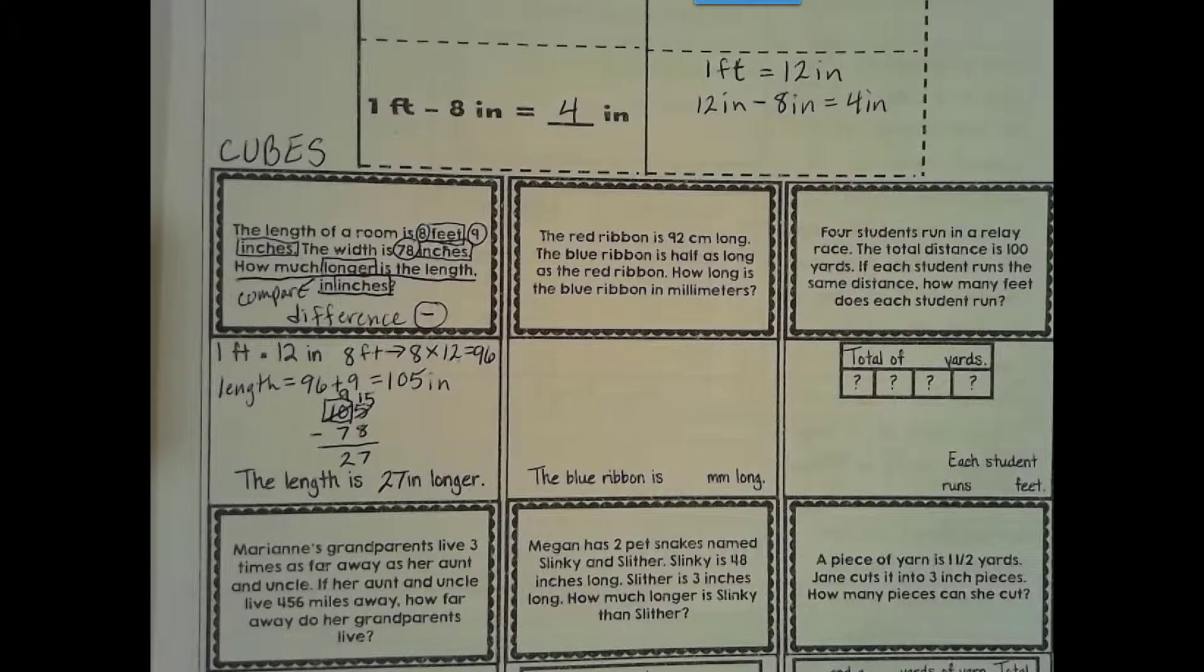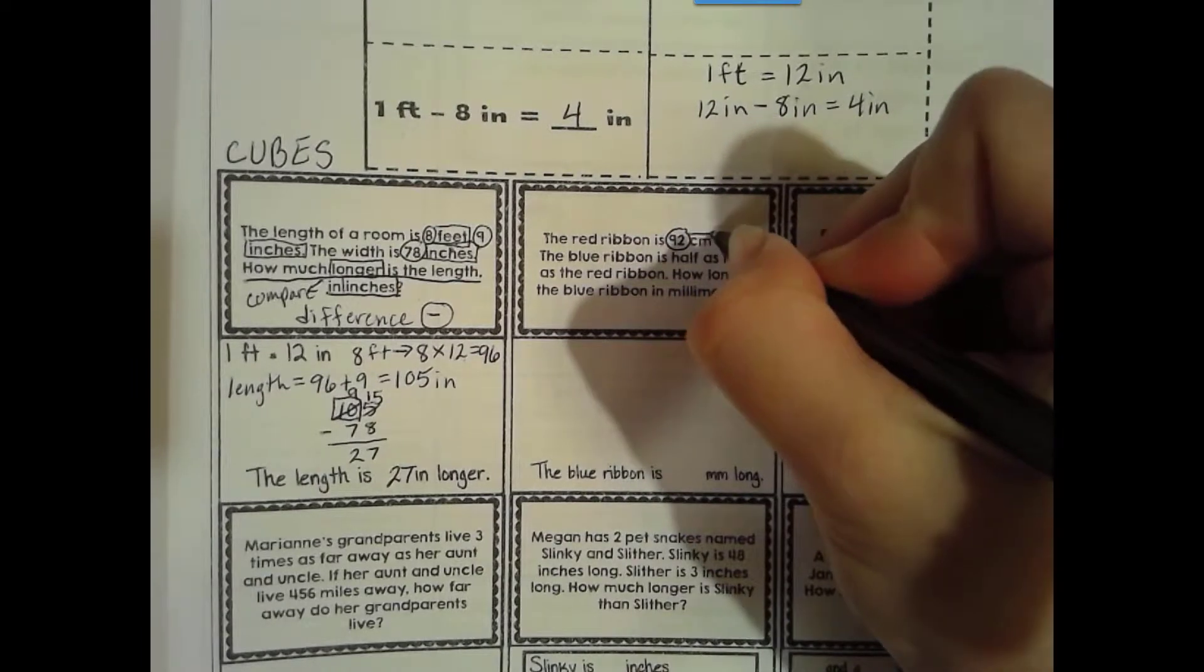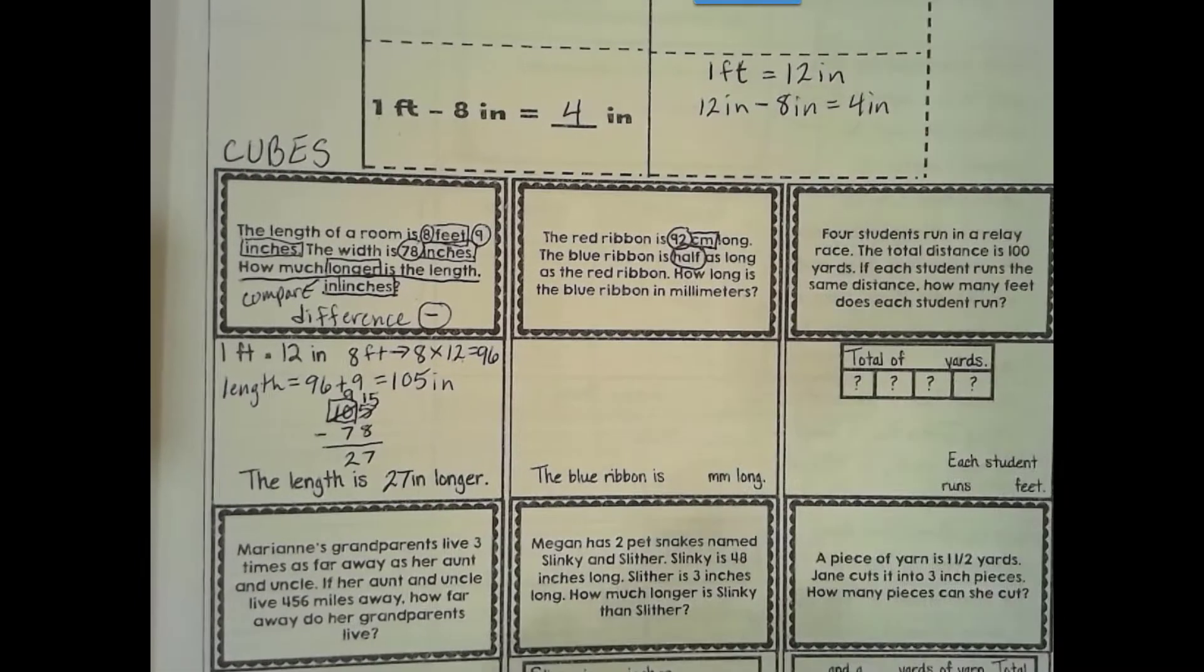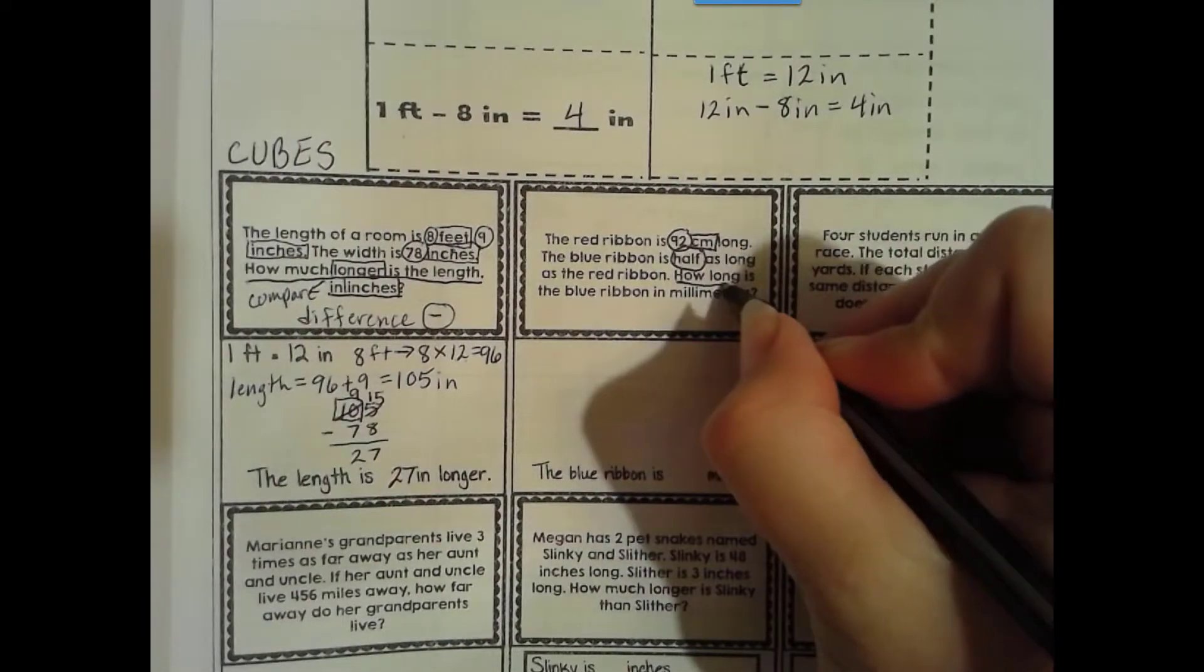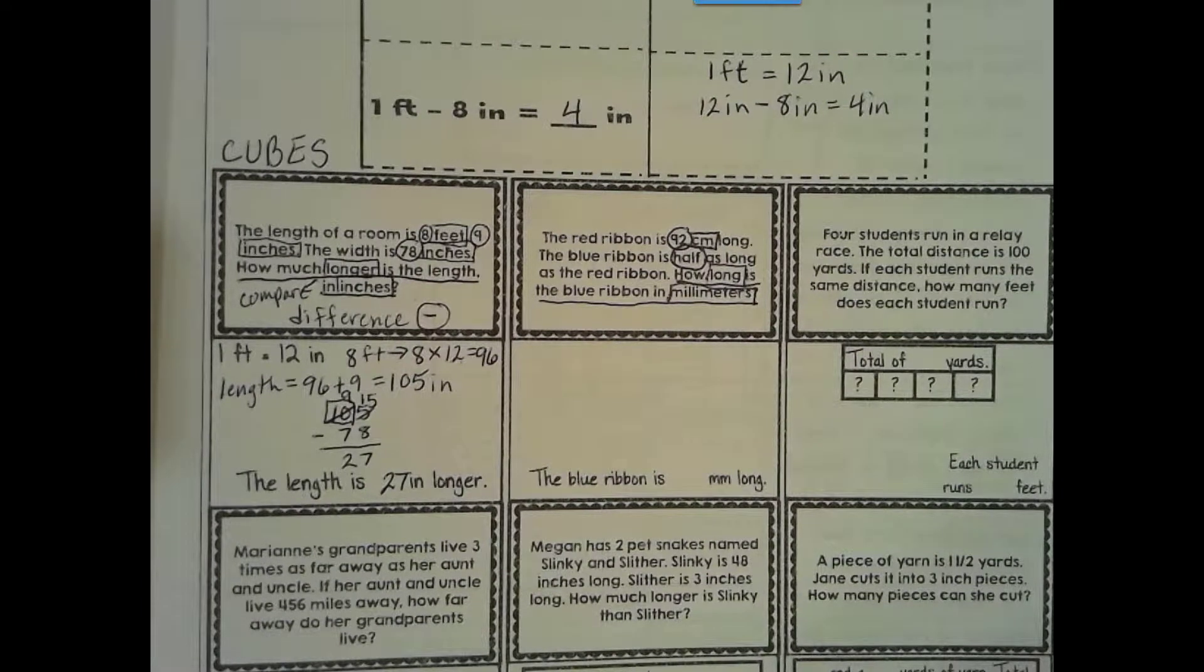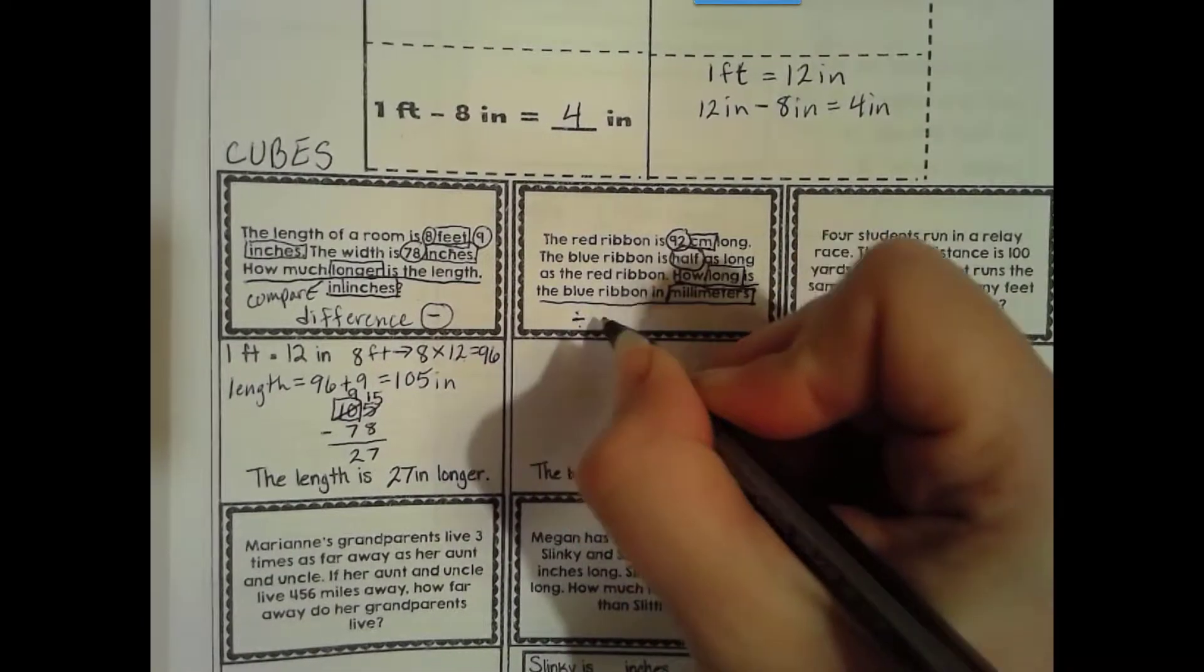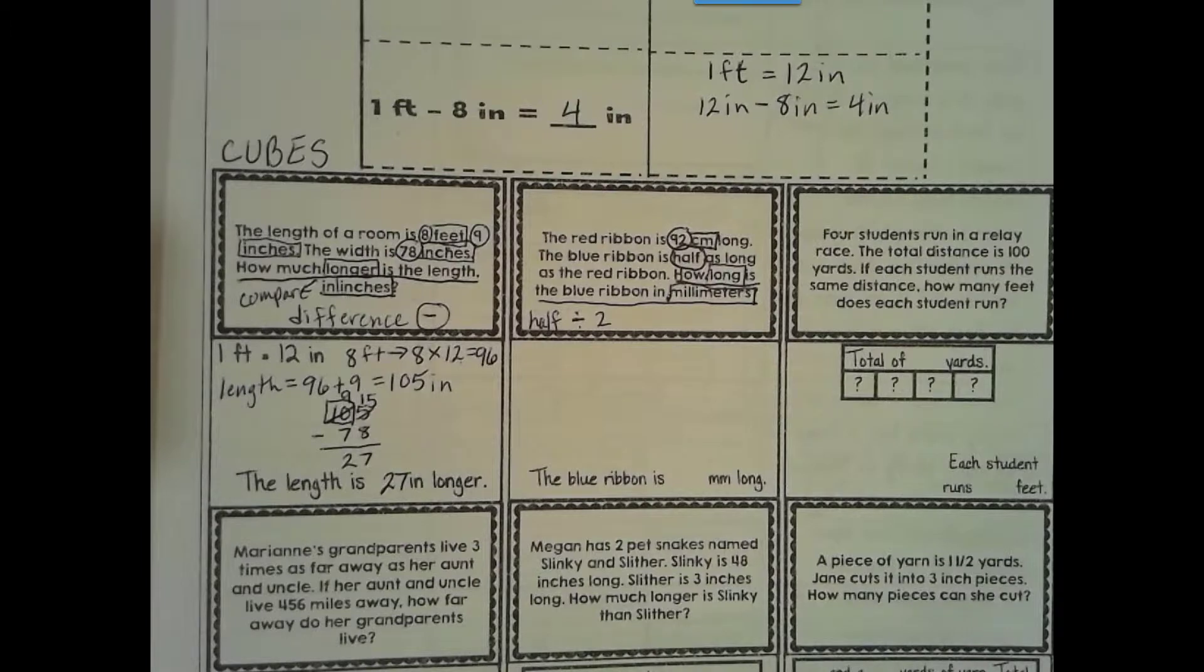Okay, our next problem. The red ribbon is 92 centimeters long. The blue ribbon is half. Now that's a number in words, but it's still a number, so we circle. Half as long as the red ribbon. How long is the blue ribbon in millimeters? So we want to know the length. And then we need to convert it to millimeters. So half means we're going to divide by 2. And you see half. Divide by 2 or multiply by 1 half. But we haven't multiplied with fractions yet.